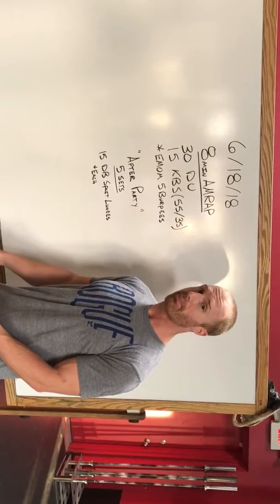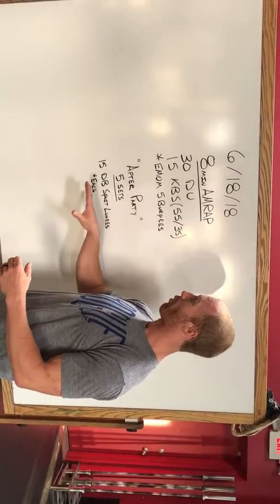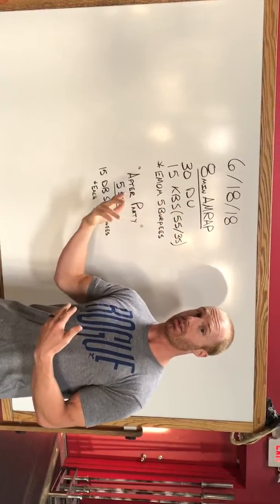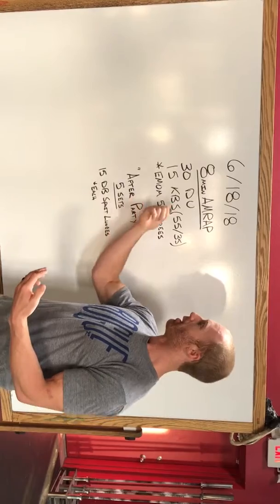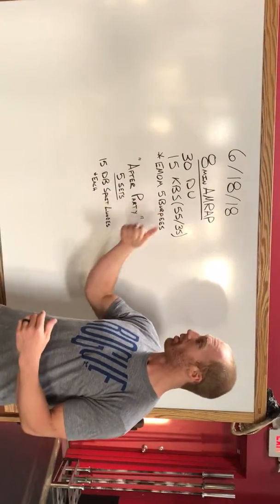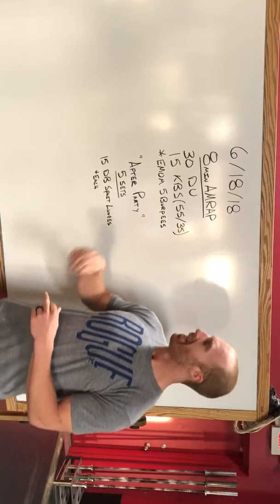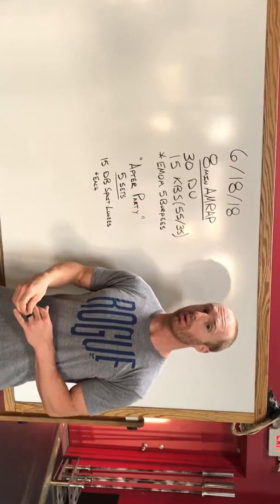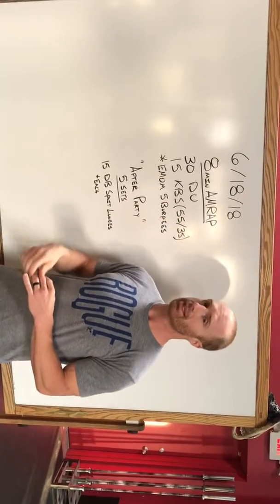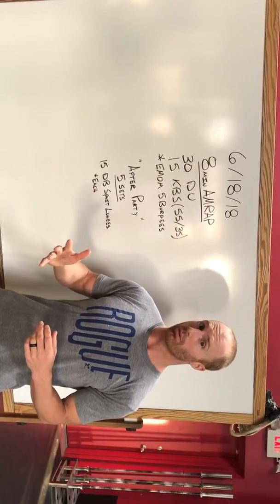We kind of grind through that. For the top piece, if we're going to scale the 30 double unders, we're going to do 60 singles or 15 single-doubles. The 15 kettle bell swings isn't that aggressive a load—last week we did heavier loading at 55/35 pounds. It's an easy weight, something I'm going to try to push unbroken, maybe two sets towards the back half. That's only 8 minutes, so it's 80 to 90% effort all the way through.